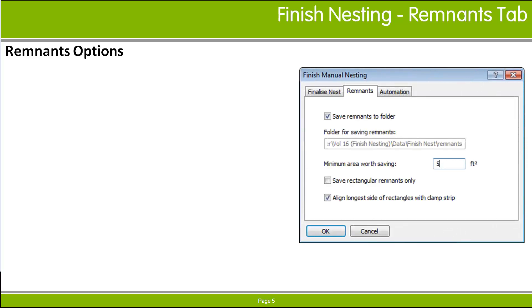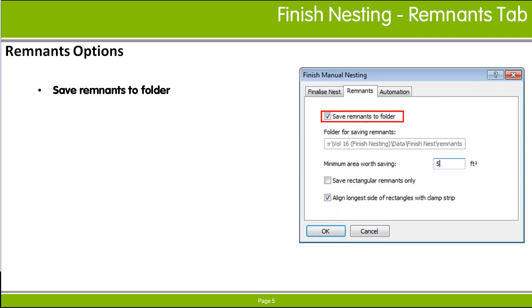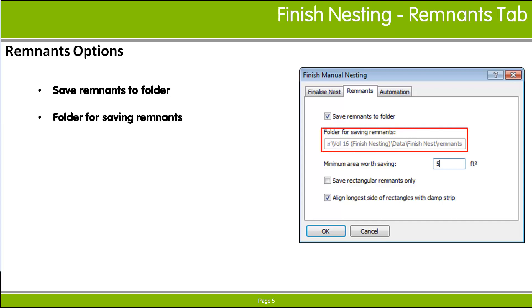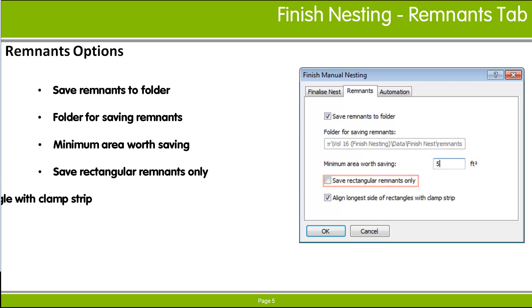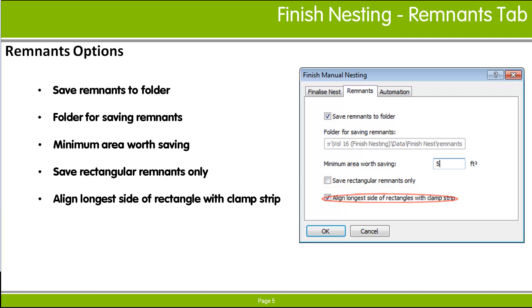The Remnants tab provides the option to save remnants to a folder if you want to create remnant sheet drawings. The drawings will be saved when you click OK in the dialog. The folder for saving remnants field provides the options to define the location where remnant files are saved. This field is already defined if working within a project and therefore inactive. All options are fully described in the RAIDIN help system.